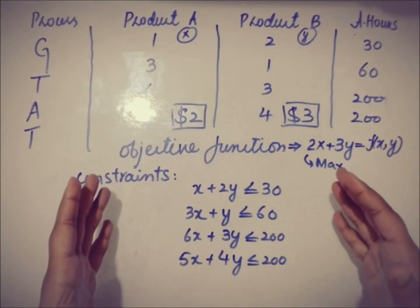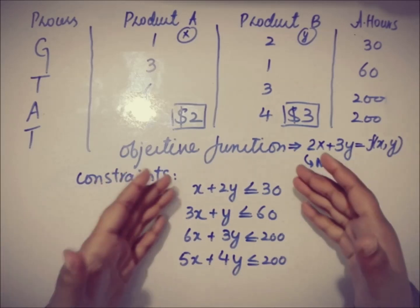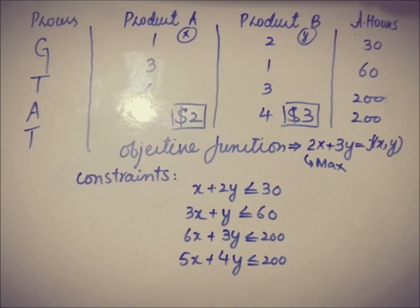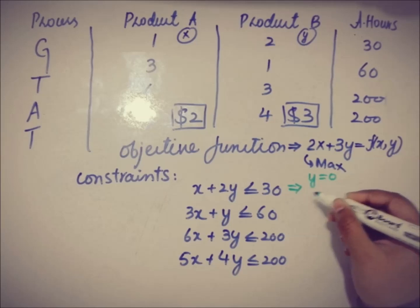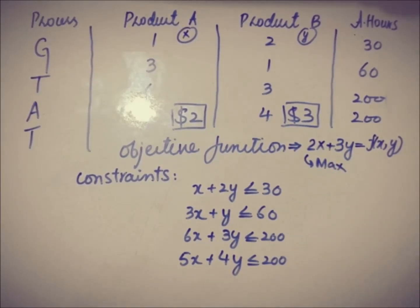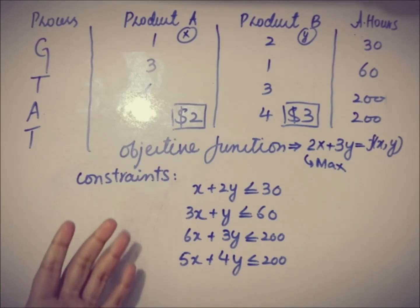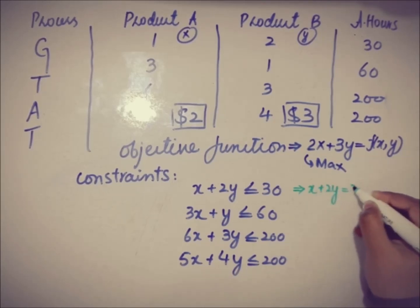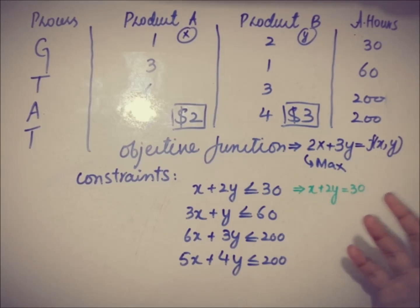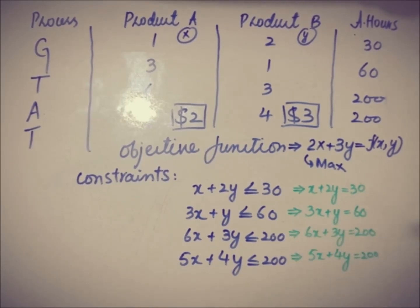Moving towards the solution — the first step when using the graphing method is to find the intercepts according to the given constraints. When finding the x-intercept, I put y equal to zero to figure out the value of x. Before taking the intercepts, I have to write all the constraints in their subsequent equality form. So I'm writing each constraint as an equation. There are four equations.